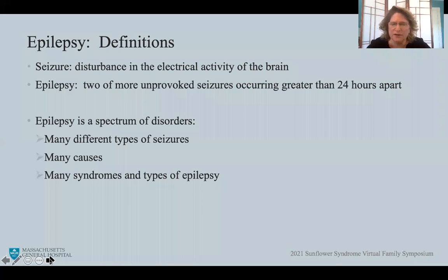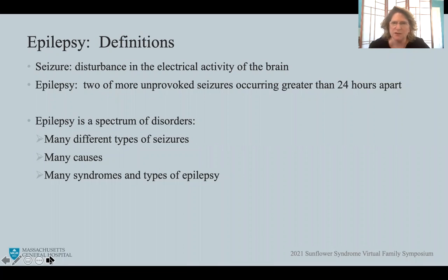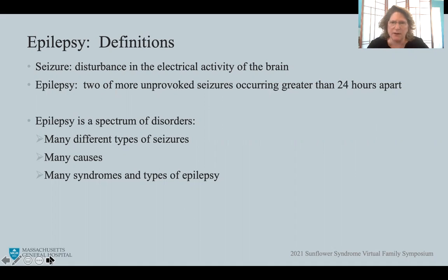First looking at definitions: a seizure is defined as a disturbance in the electrical activity of the brain, and what the seizure looks like depends on the area of the brain that is involved in the seizure activity. Epilepsy is defined as two or more unprovoked seizures occurring greater than 24 hours apart. We know that epilepsy is actually a spectrum of disorders.